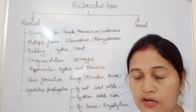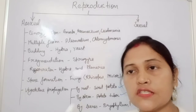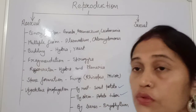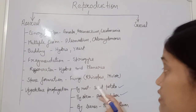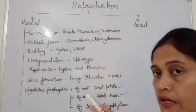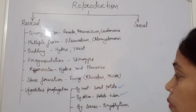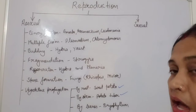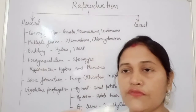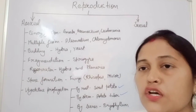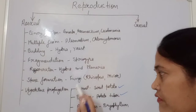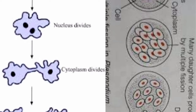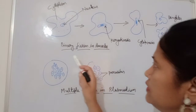Spore formation occurs in Rhizopus and Mucor. Vegetative propagation involves parts of the plant other than the flower — root, stem, and leaves — because the flower is the reproductive organ of the plant. By root: sweet potato, which is a modified root. By stem: potato tuber, which is a modified stem. By leaves: Bryophyllum, where buds arise on the leaf margins and develop into new plants.